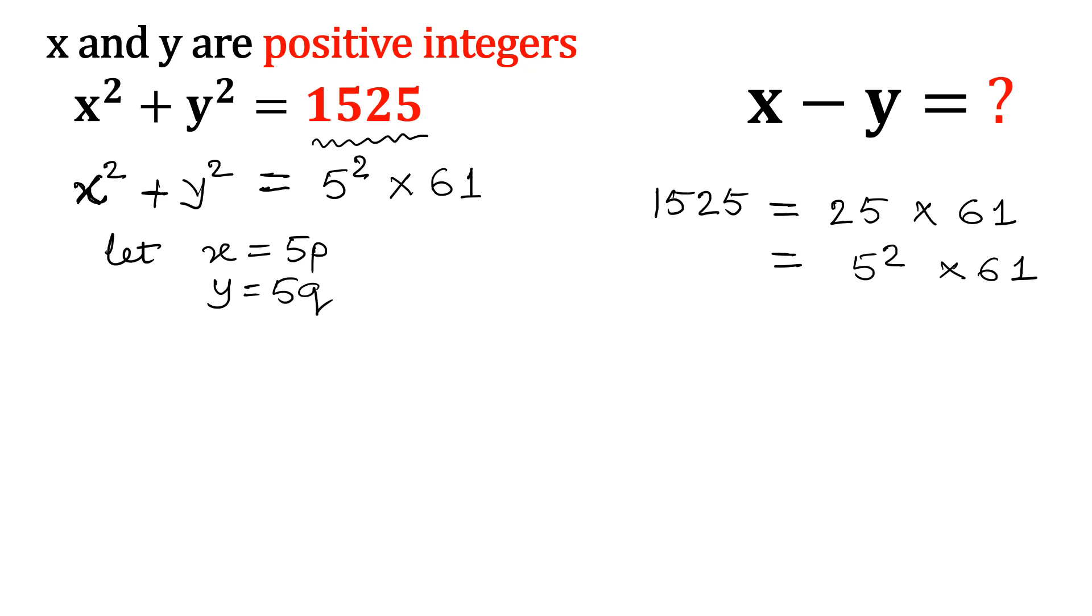Why I am doing this? Because there would be 5 square on both sides. Let me put this value: 5p whole square plus 5q whole square is equal to 5 square times 61.